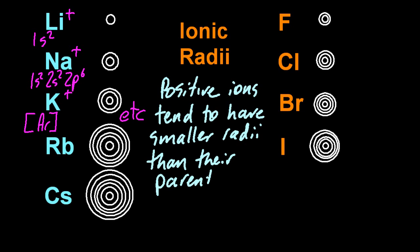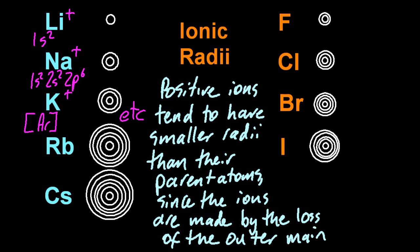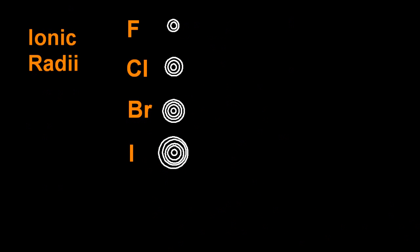So in IB speak, positive ions tend to have a smaller radii than their parent atoms, since the ions are made by the loss of the outer main energy level. Almost all the time.